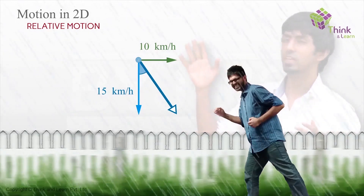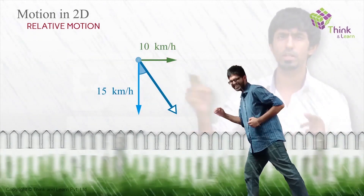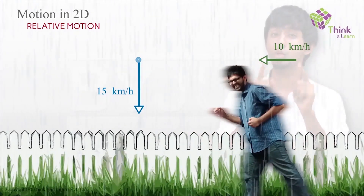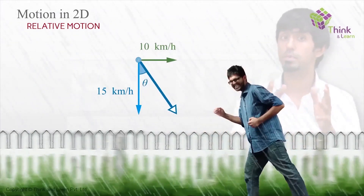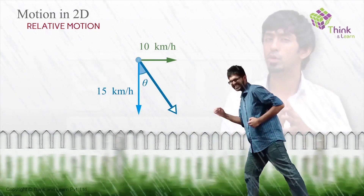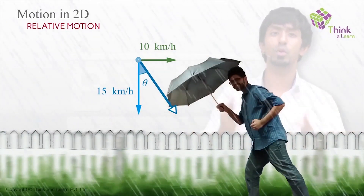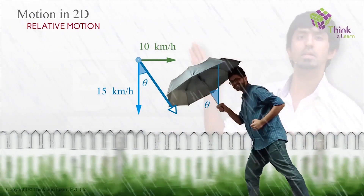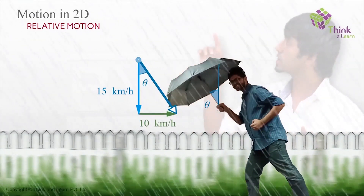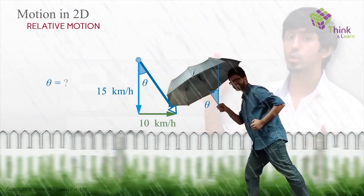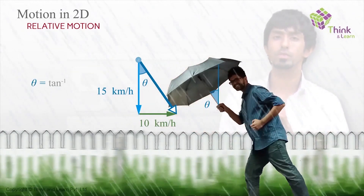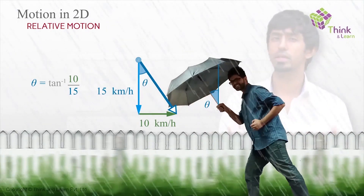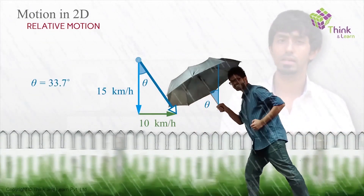So you have 15 kilometers per hour downward and 10 kilometers per hour toward you. As far as you are concerned, the raindrop has two velocities in perpendicular directions, so the resultant velocity must be at an angle. Rain falling vertically with respect to the earth will appear to come at an angle simply because you are moving. To find what angle to hold your umbrella, calculate the resultant: the angle theta with the vertical is tan inverse of your velocity divided by the rain's velocity — in this case tan inverse of 10/15, or 2/3, which is approximately in the 30s.